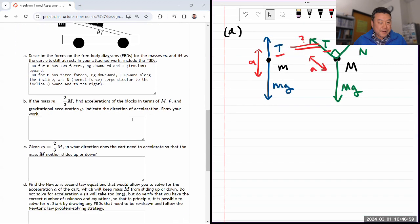Part B. They are giving us a value of the masses. Find the accelerations of the blocks in terms of masses, theta and gravitational acceleration g. Indicate the direction of acceleration. Show your work.